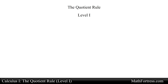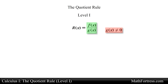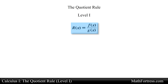In this video we will learn how to deal with functions formed by a quotient of functions. The quotient of two differentiable functions f and g is itself differentiable at all values of x for which g does not equal 0, because division by 0 is undefined. One way to obtain a formula for the derivative is by making use of the product rule. Say we have a function r formed by the quotient of f and g, making sure that g does not equal 0.